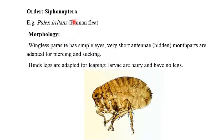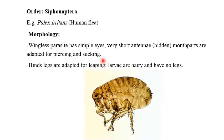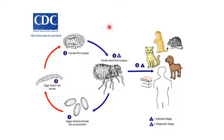Order Siphonaptera — for example, Pulex irritans, the human flea. Morphology: wingless parasite, has simple eyes, very short antennae. Hidden mouth parts are adapted for piercing and sucking. Hind legs are adapted for leaping. The larvae are hairy and have no legs, as seen in the life cycle of the flea.